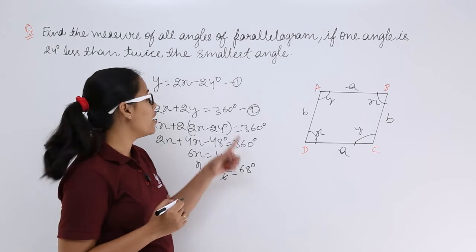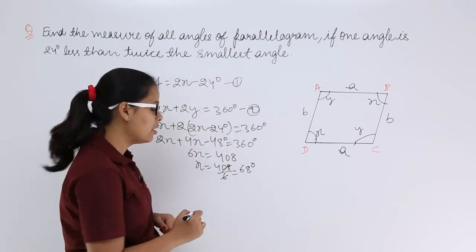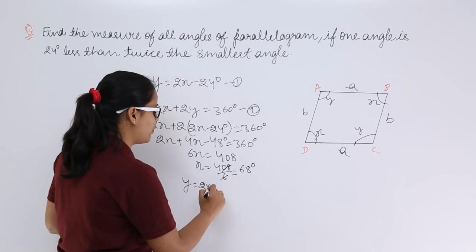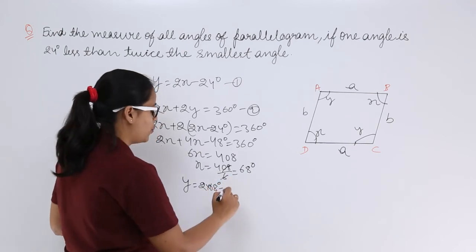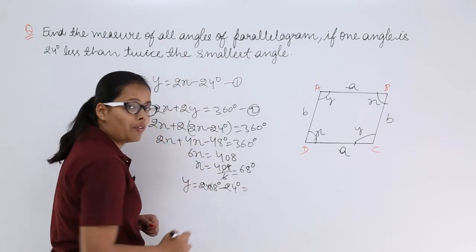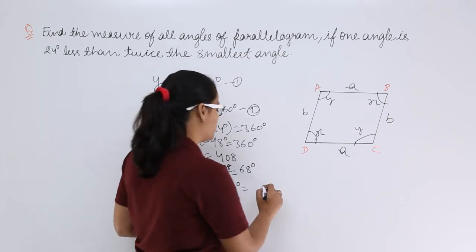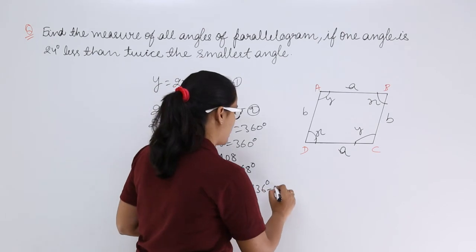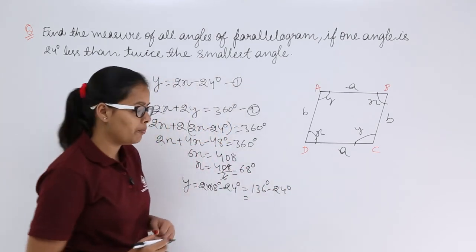Now substituting x = 68 into equation 1: y = 2x − 24. Twice 68 is 136 degrees, so y = 136 − 24 degrees.